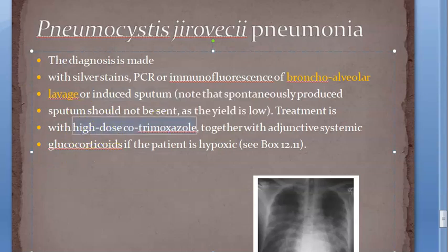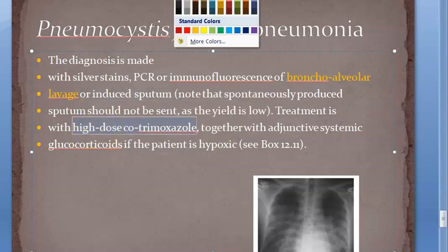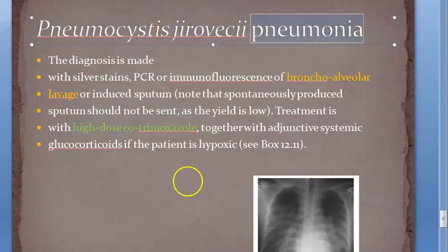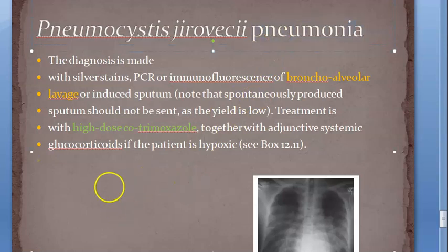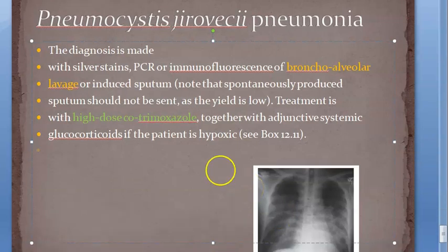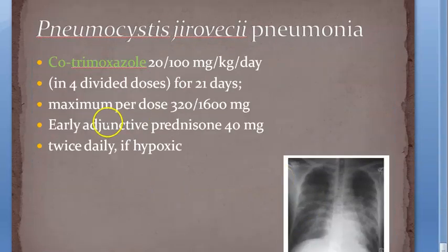The treatment - and this is what they expect you to write in the exam - is high-dose cotrimoxazole. In the name itself, Pneumocystis jirovecii pneumonia, everything is there. What they want you to know is: yeast-like fungus, it can cause pneumothorax, and high-dose cotrimoxazole is the treatment.